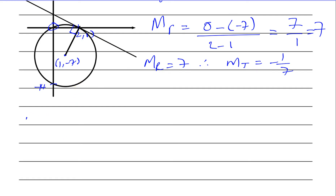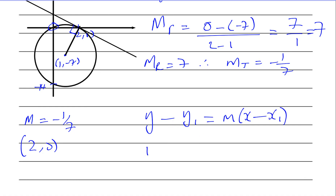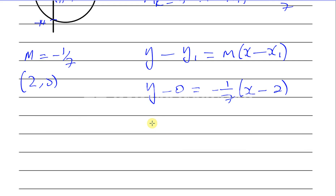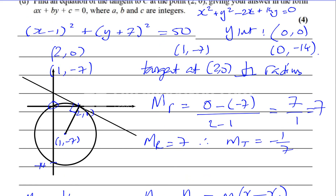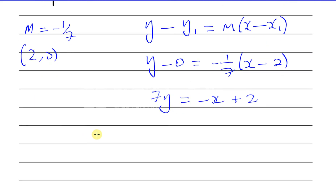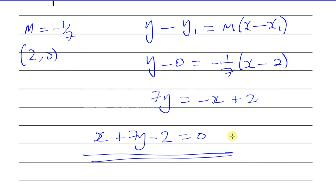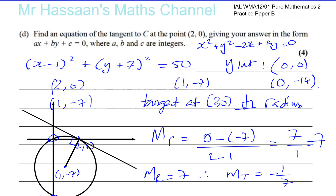We now have gradient minus one-seventh and the point (2, 0). Using y minus y1 equals m(x minus x1): y minus 0 equals minus one-seventh times (x minus 2). Multiplying both sides by 7: 7y equals minus x plus 2. Rearranging to get everything on one side: x plus 7y minus 2 equals 0. That's the equation of the tangent at the point (2, 0).